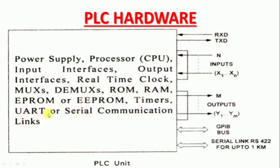Timers, UART and Serial Communication. RST, TST, Serial Communication Limits, Inputs, N Inputs. GPIB Bus — this is General Purpose Interface Bus. This is the PCI system. This is the Serial Communication. RS-422. Here is a PLC hardware.